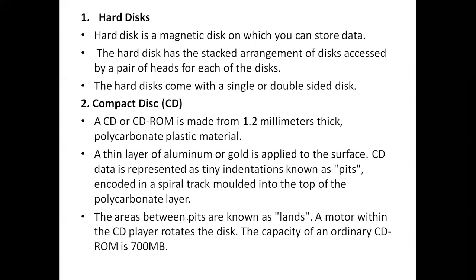We will see some of the secondary storage devices. This is theory you need to elaborate in your exam. One secondary storage device is the hard disk. A hard disk is a magnetic disk on which you can store data. The disks are accessed by a pair of heads for each disk. The hard disk comes with a single or double-sided disk. The next one is the compact disk. A compact disk has a very thin aluminum layer. Data is represented on tiny indentations, which we call arcs and pits — that is the compact disk.